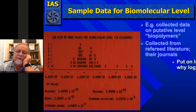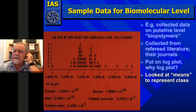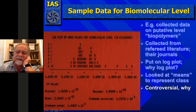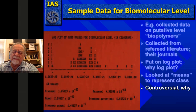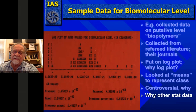Why do we use a log plot? Because in allometry you use log plots to see the equations. We looked at the means to represent the entire class. There were outliers even in the case of biopolymers. The question is whether we should look at the mean or the mode as the measure of central tendency — that's controversial. In some ways the mode is better because outliers can so greatly affect the distribution.